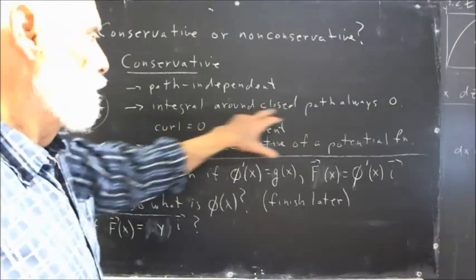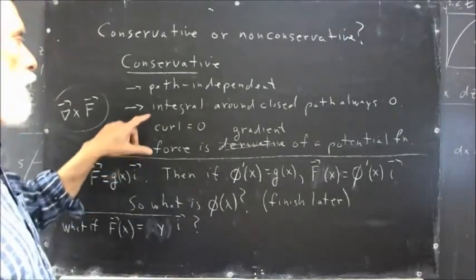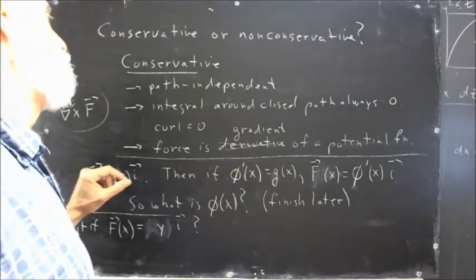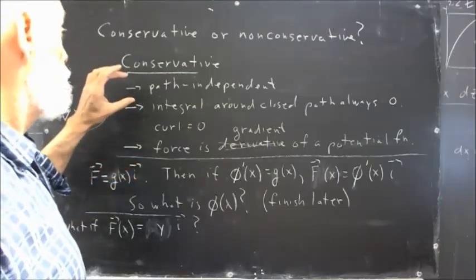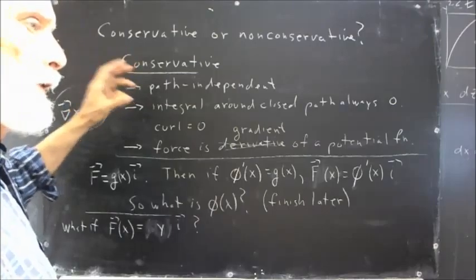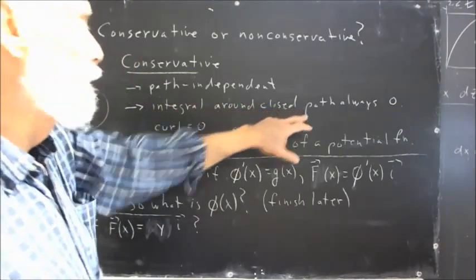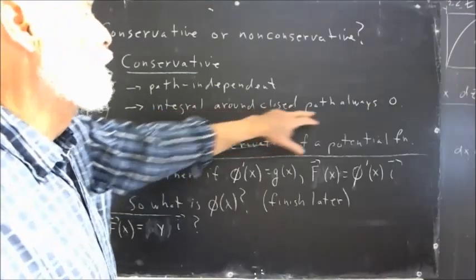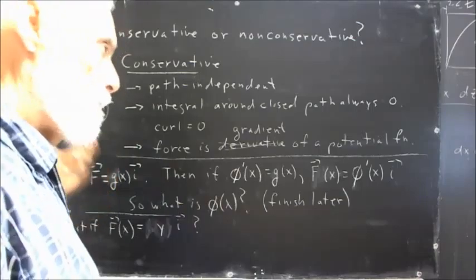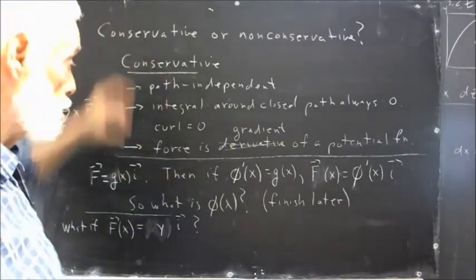Another is the integral around any closed path is zero. Now, we can use either this or this to show that a force or a function is non-conservative. We can pick a path, and if the integral around the closed path is non-zero, then we can conclude that the force is not conservative.